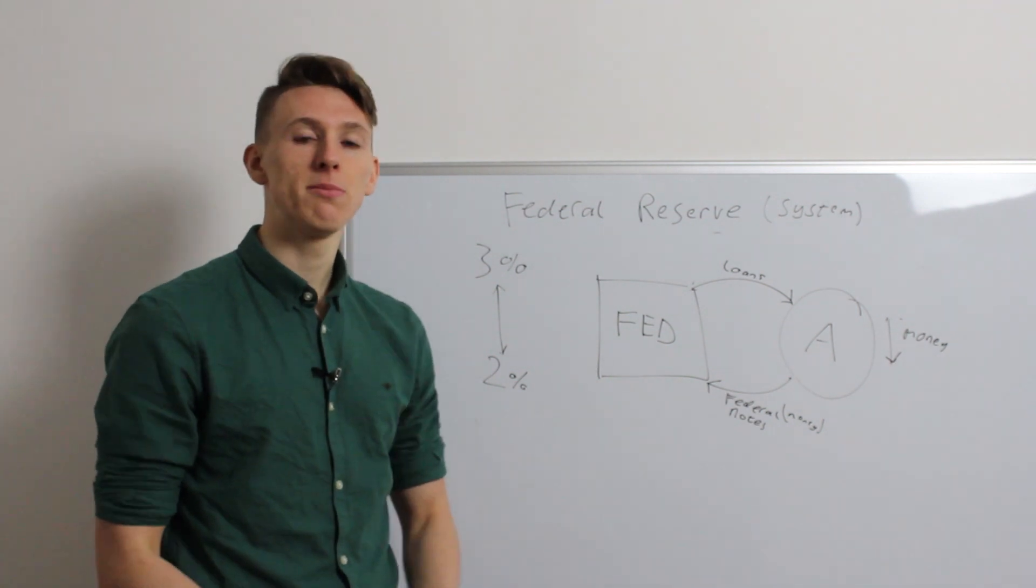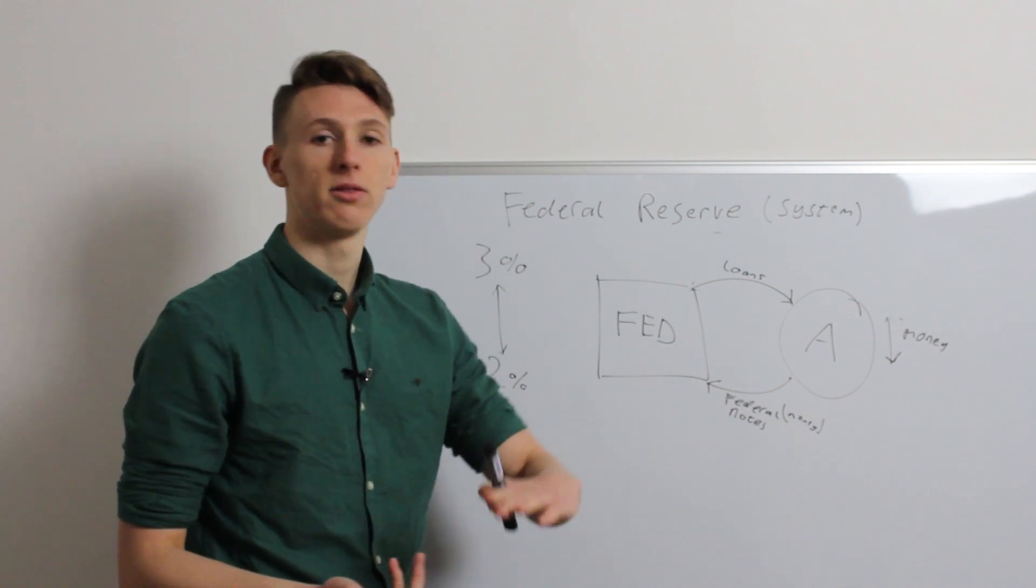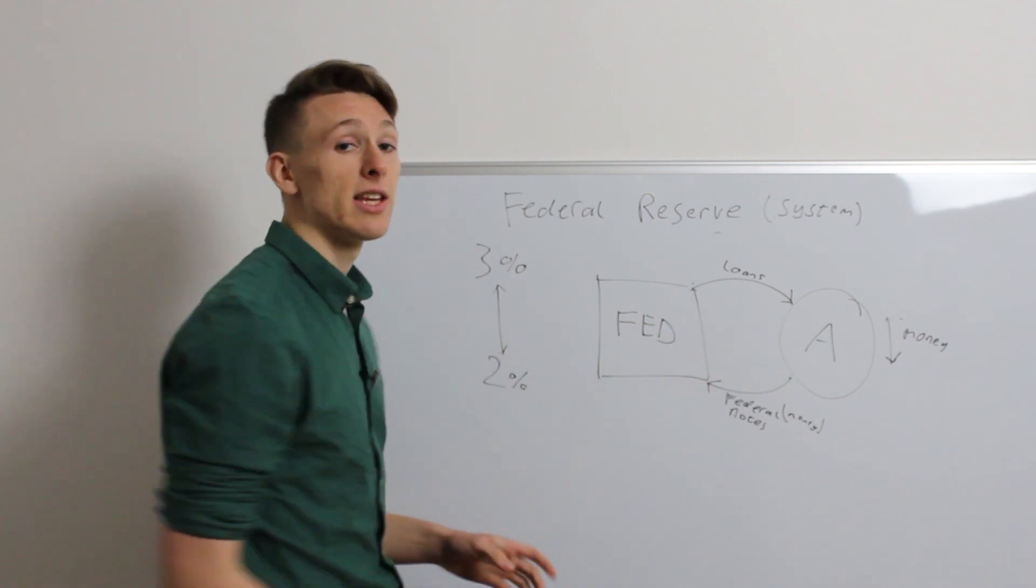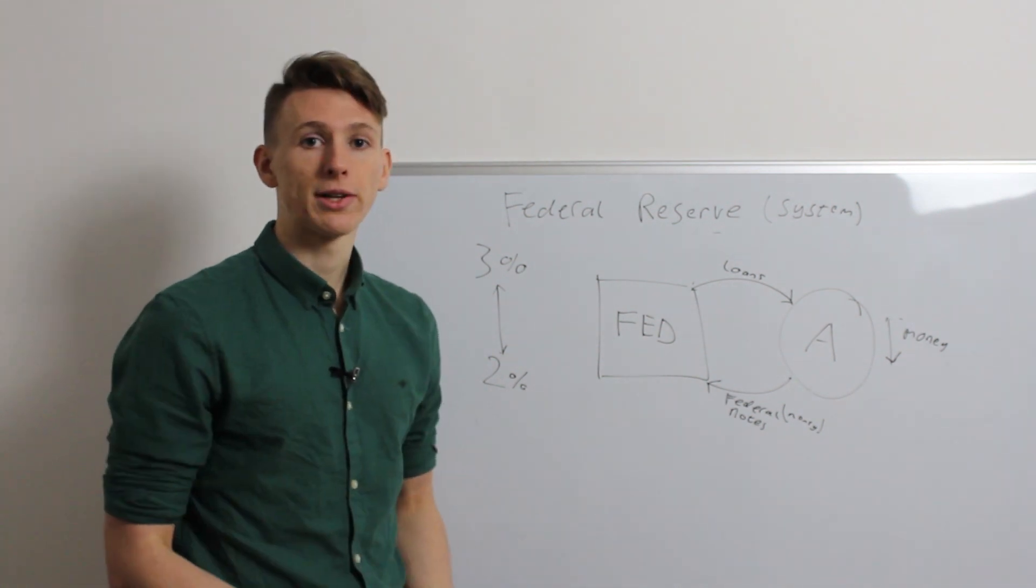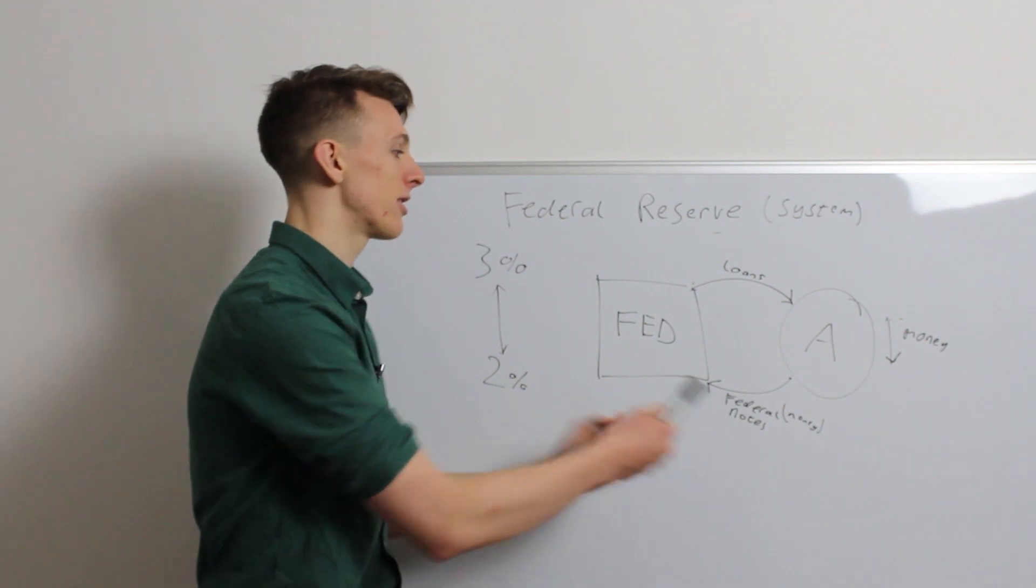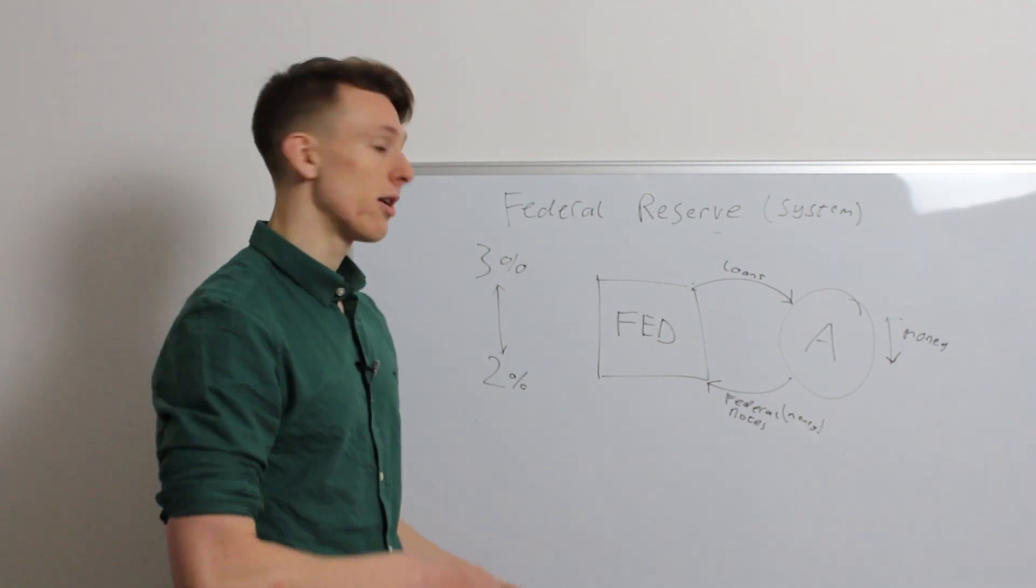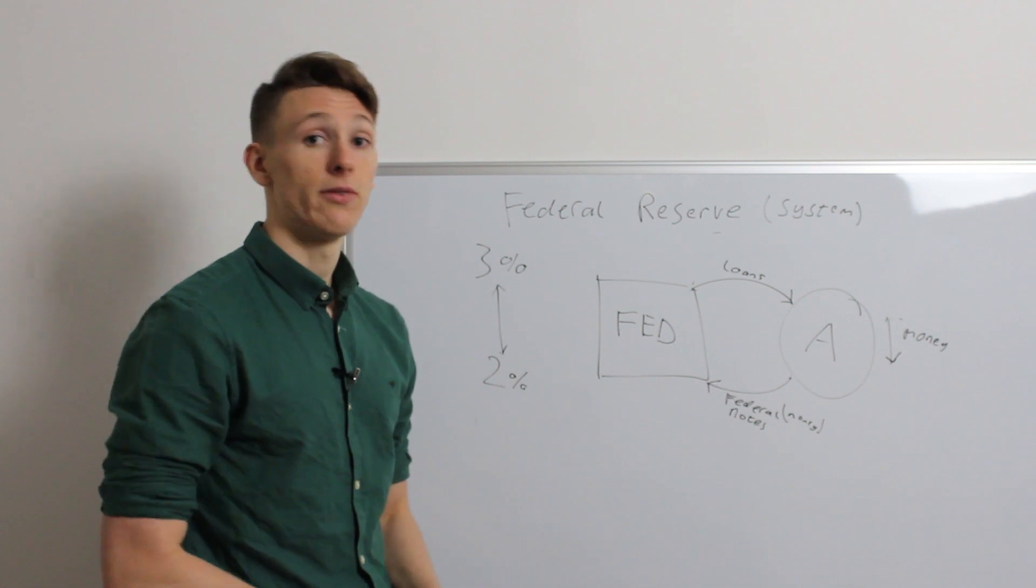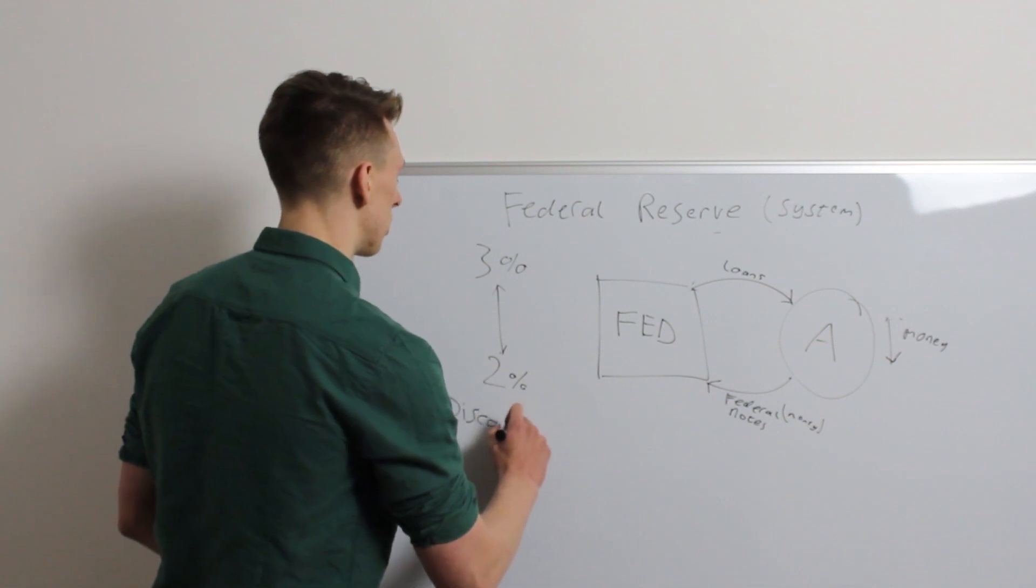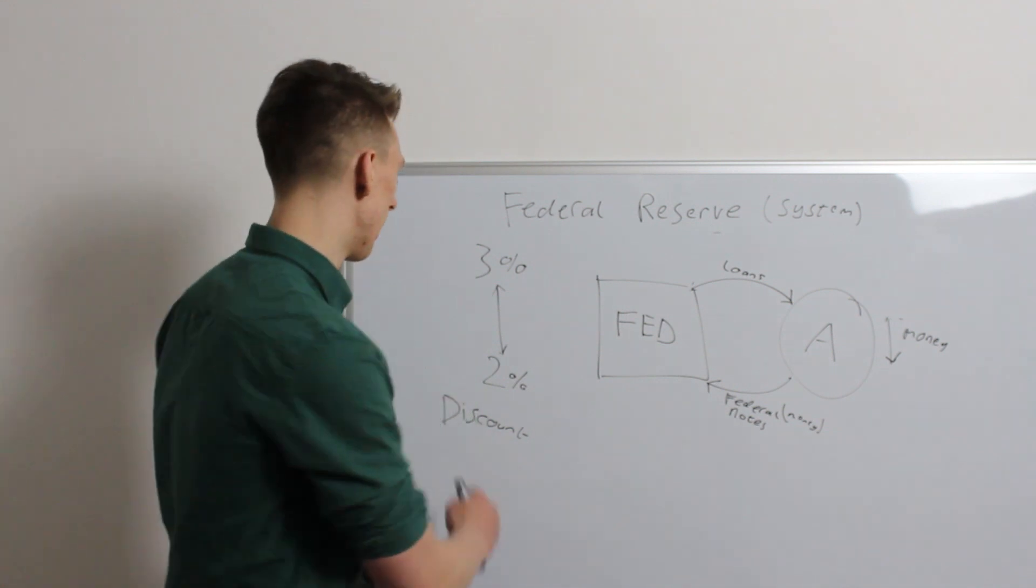So, that's all it is, it's quite simple. Whenever you hear anything in the news saying, the Bank of England has increased interest rates, the Federal Reserve has increased interest rates, that's all they're doing, they're buying and selling these loans between the banks. And I talked about the open market operations earlier, that's what this is, this is a form of open market operation, buying and selling loans from banks. There's a few other open market operations, but I don't have time to go into it in this video. If you want to look it up, the Federal Reserve has a thing called the discount rate, which is the cost to borrow money directly from the Fed. So have a look at that.